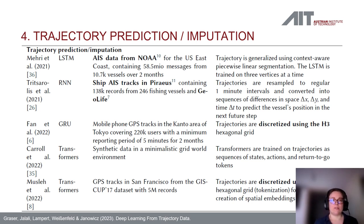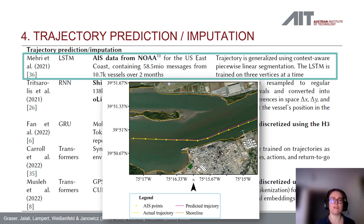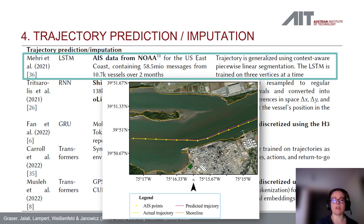Use case four is trajectory prediction and imputation, shown here with high-density trajectories. Mary et al. use AIS data and generalize these trajectories using a context-aware piecewise linear segmentation, then train an LSTM model on three vertices at a time. This way the LSTM learns to predict trajectories into the future at a geographically detailed level.